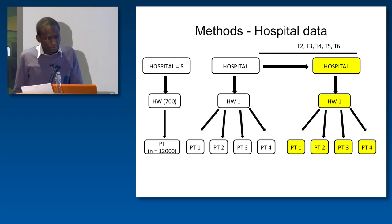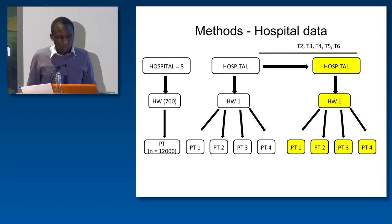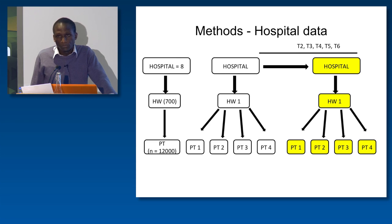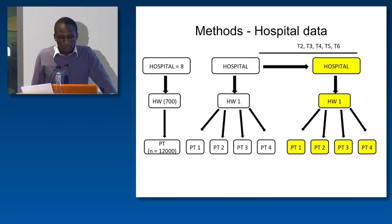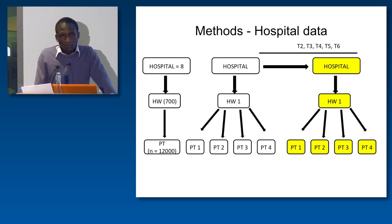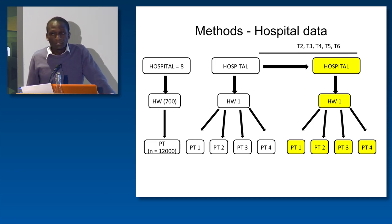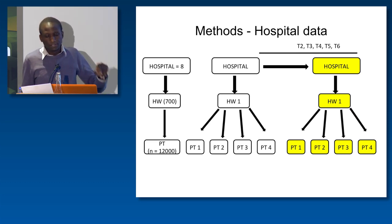The data we generated was from eight hospitals — four in the intervention arm and four in the control arm. We had a total of 700 clinicians within these eight hospitals, and during the study period they saw up to 12,000 patients. You can appreciate the data structure I described: at a cross-section or point in time, that would represent data from one hospital and a single clinician seeing several patients. It was also possible from the study design to get measurements at different points in time — up to six time points when we evaluated quality of care at the same hospitals.